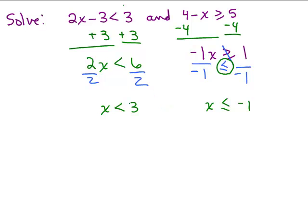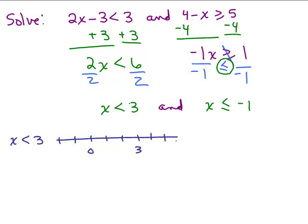This was an 'and' compound inequality, so we want numbers that are less than 3 and also less than or equal to negative 1. One way of doing it is to graph each of them. Let's graph X is less than 3 — we just look at the overlap. So let's say this is 3 and that's 0. If I want less than 3, it's going to be a parenthesis or an open circle, and it keeps on going to the left.